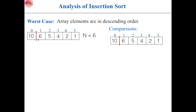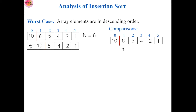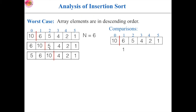This is our sorted array and this is our unsorted array. First, 6 is compared with 10 — here the elements are not in the correct order, because we are trying to arrange the elements in ascending order, so 6 has to be before 10. For this element 6, we need one comparison. Now this is our sorted part and this is our unsorted part. This is not the correct position for 5; it has to be before 6. So 5 is compared with 10 and again 5 is compared with 6. For this element, we need two comparisons.